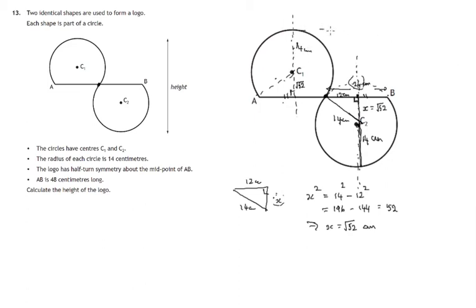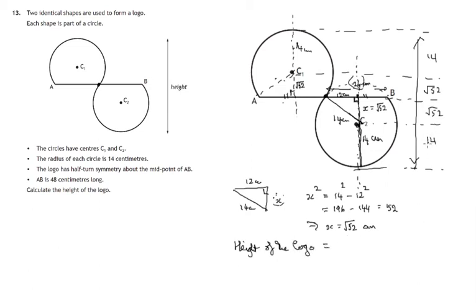So remember we were trying to find the full height of the logo. And we've got various pieces of it. There's a 14. There's a root 52. There's another root 52. And there's a 14. So height of the logo is equal to 14 and 14 is 28. Two lots of root 52. And that's centimetres. Now that's the exact value.